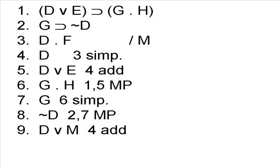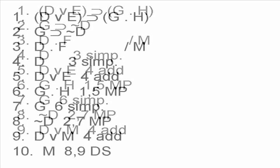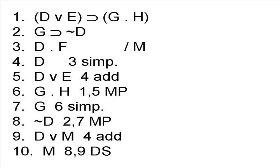Now we can add the M. We could have added the M earlier, but it might make more sense now. By adding the M on line 9, notice what we have on lines 8 and 9. We have a disjunctive syllogism, the conclusion of which is M, thus proving the argument valid.